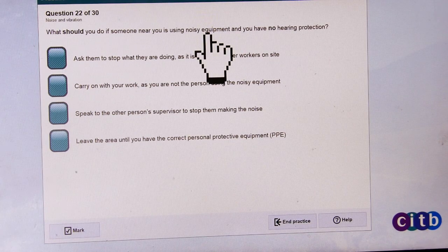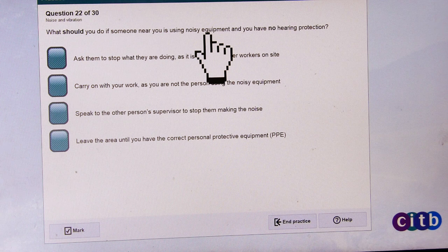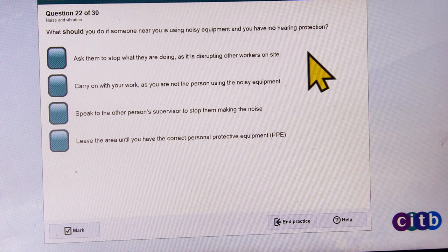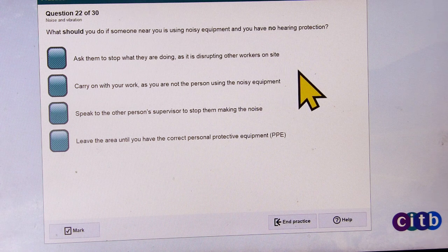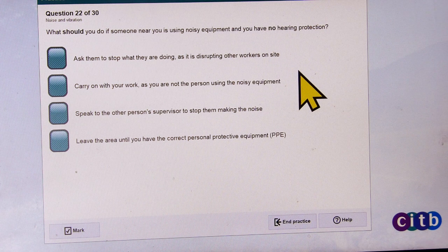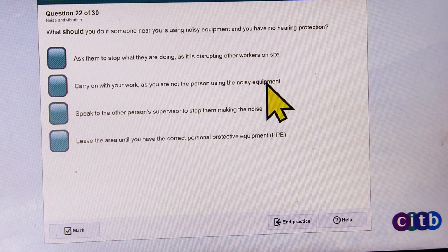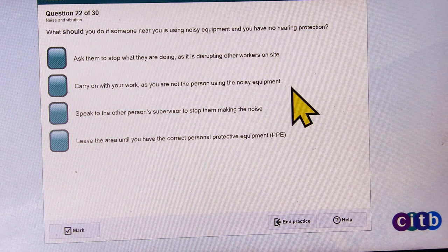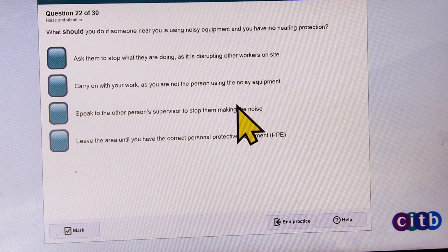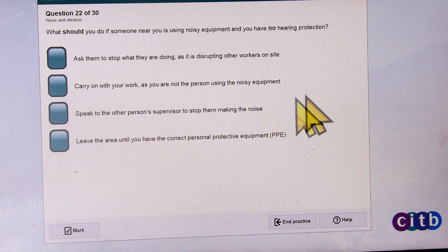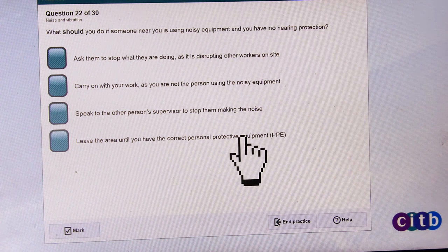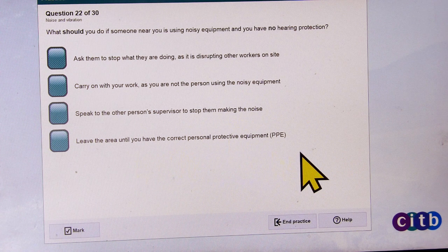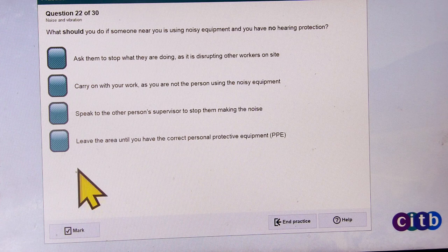What do you do if someone near you is using noisy equipment and you have no hearing protection? Ask them to stop what they are doing as it is disrupting other workers on site, carry on with your work as you are not the person using the noisy equipment, speak to the other person's supervisor to stop them making the noise, leave the area until you have the correct personal protective equipment, PPE.